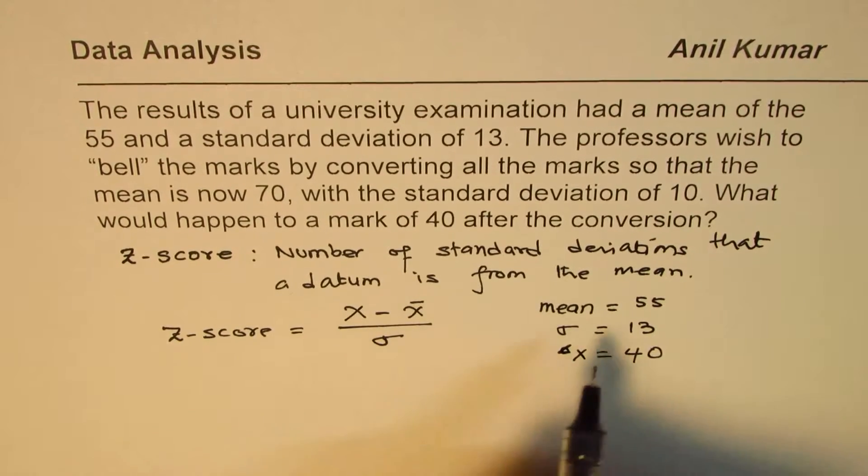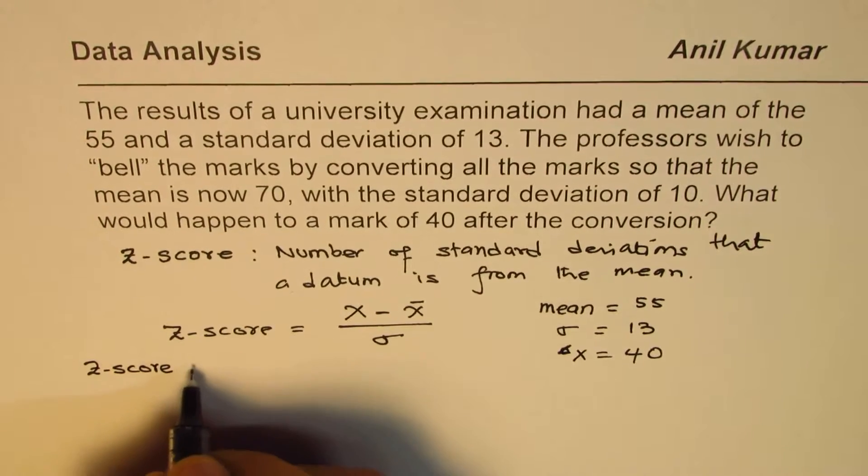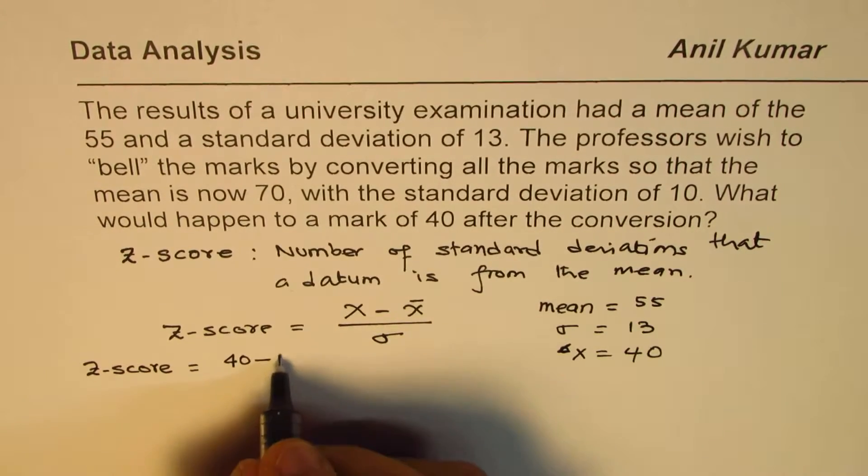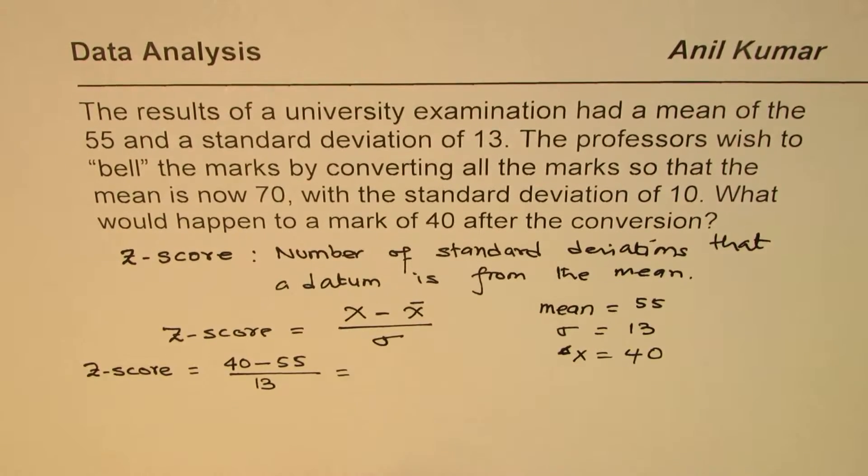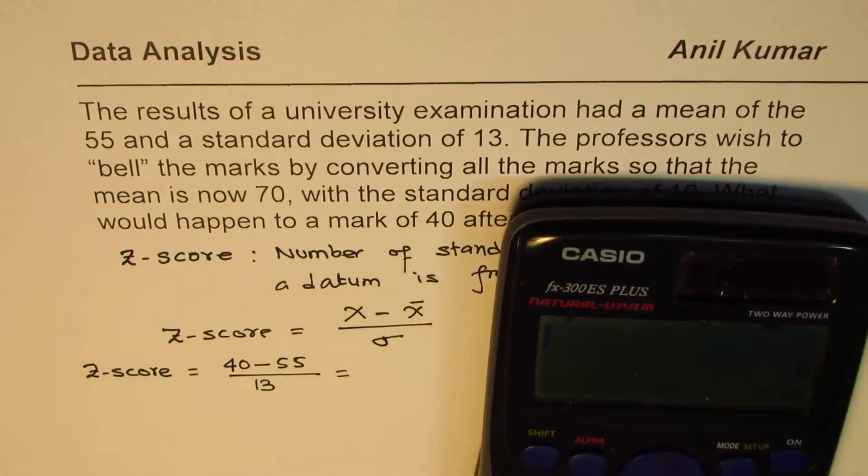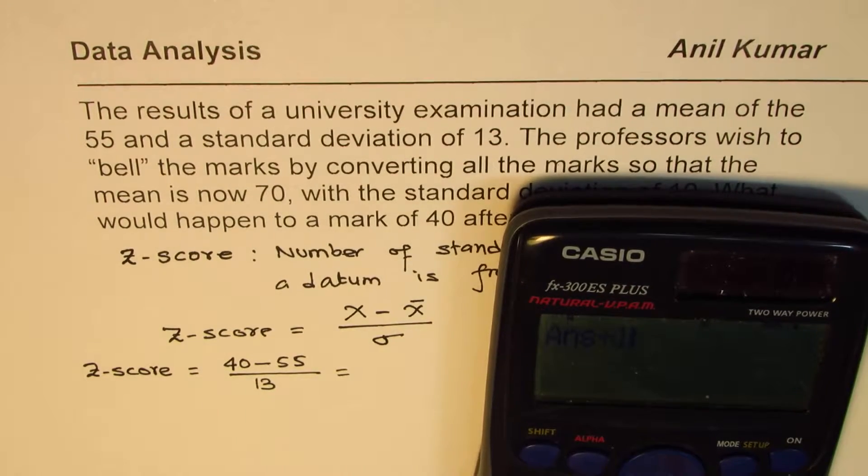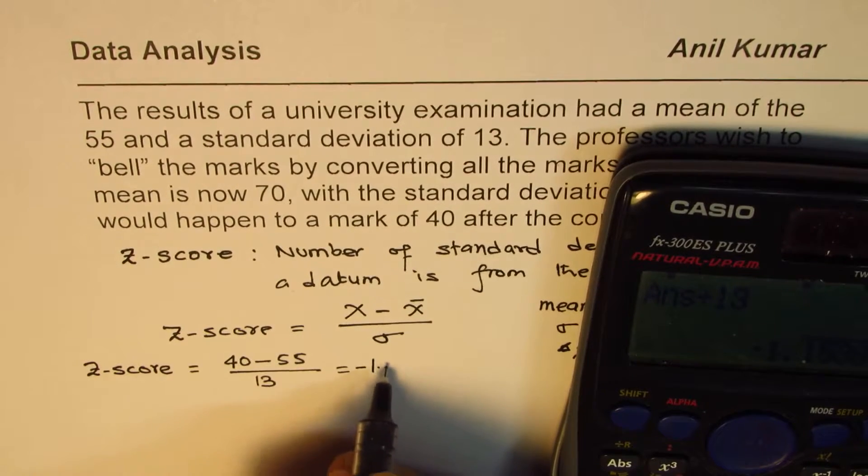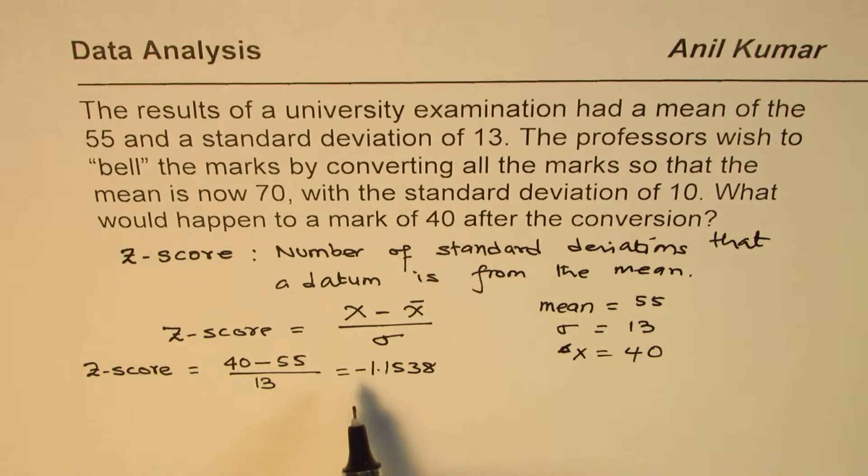In this case, the initial z-score is actually 40 take away the mean value 55 divided by the standard deviation 13. So let's calculate this value. We get 40 take away 55 divided by 13, which equals in decimals minus 1.1538.